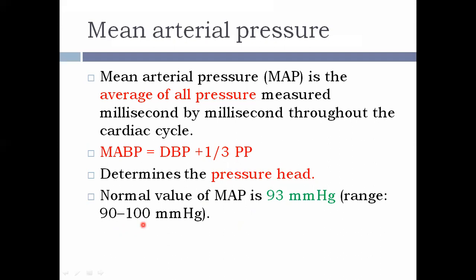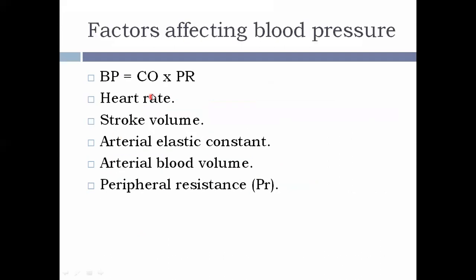This sums up the terminologies of blood pressure. Now, let's come to the factors that affect blood pressure. Blood pressure is a product of cardiac output and peripheral resistance. So any factor that influences cardiac output or peripheral resistance ultimately affects blood pressure too.